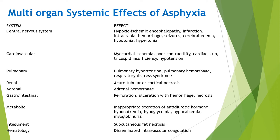On the CNS, PNA can cause hypoxic ischemic encephalopathy, brain infarction, intracranial hemorrhage, seizure, cerebral edema, hypotonia, and hypertonia. On the cardiovascular system: myocardial ischemia, poor contractility, tricuspid insufficiency, and hypotension. On the pulmonary system: pulmonary hypertension, pulmonary hemorrhage, and RDS — RDS occurs because production of surfactant requires appropriate oxygen delivery and blood supply, so hypoxia and ischemia affect surfactant production. On the renal system: acute tubular or cortical necrosis, adrenal hemorrhage, GI perforation, ulceration or necrosis, inappropriate secretion of ADH, hyponatremia, hypoglycemia, hypocalcemia, subcutaneous fat necrosis, and DIC.